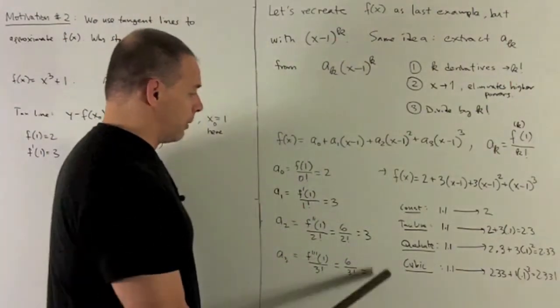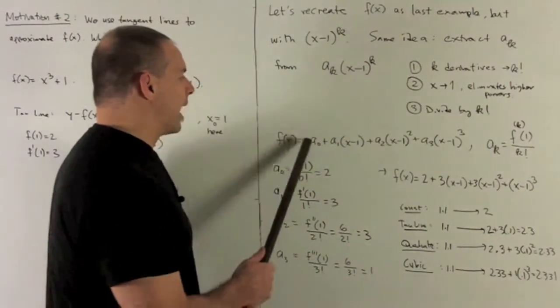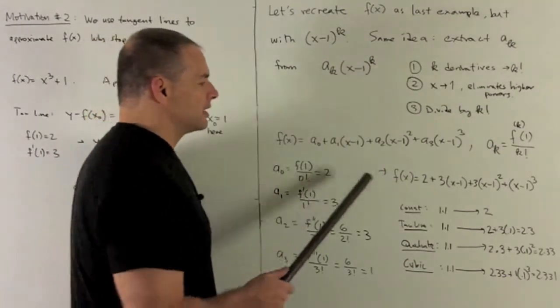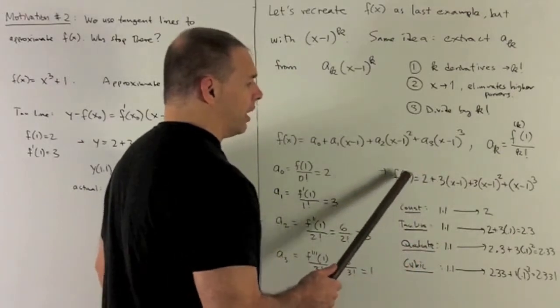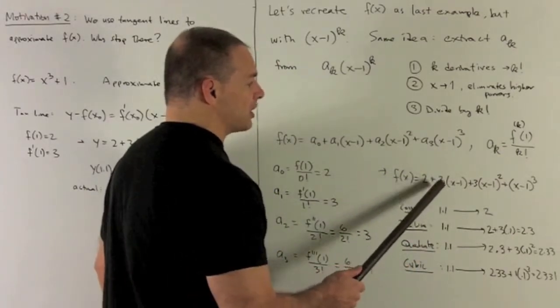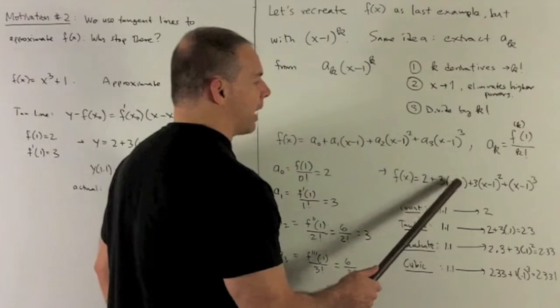I take these numbers that we have for a, we load them back up into the polynomial, and this gives me x cubed plus 1, recreated as a polynomial, written as a sum of powers of x minus 1.